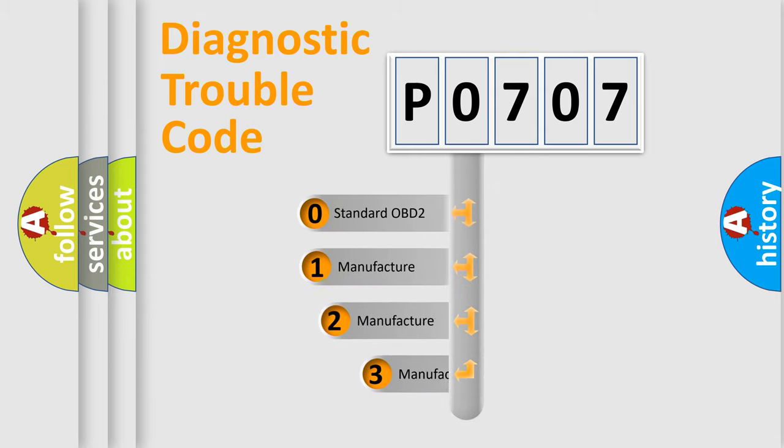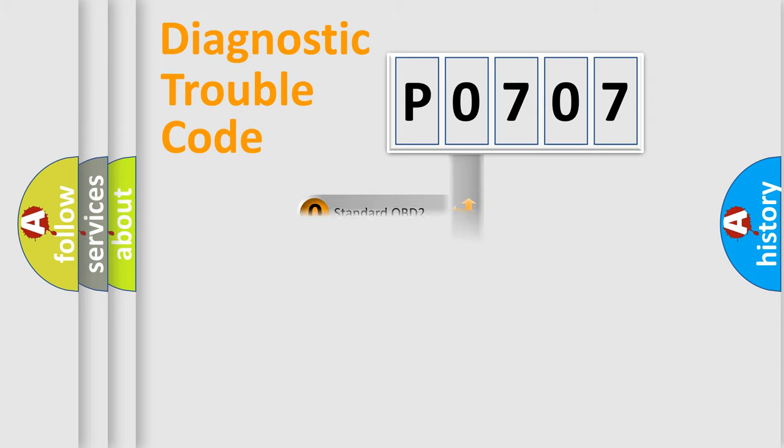If the second character is expressed as 0, it is a standardized error. In the case of numbers 1, 2, or 3, it is a more prestigious expression of the car-specific error.